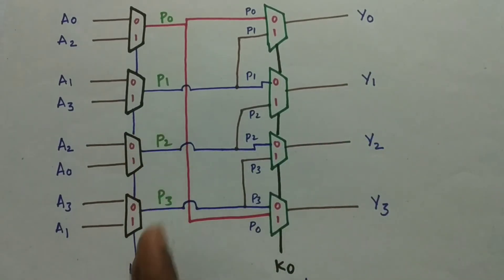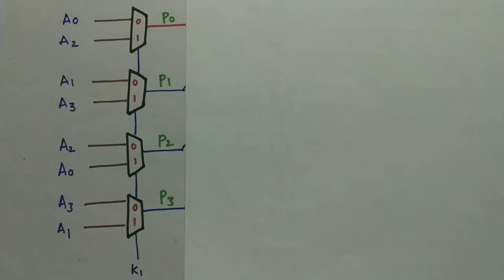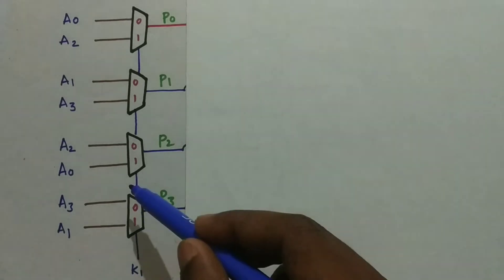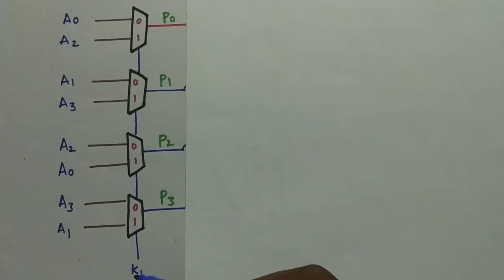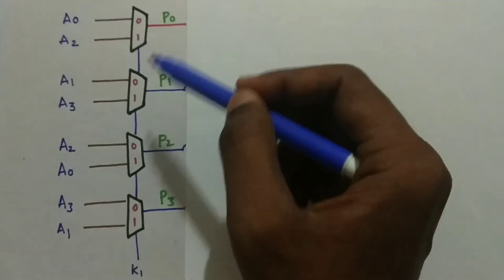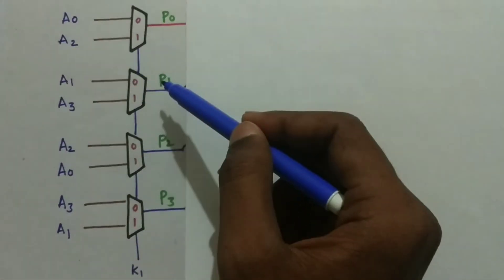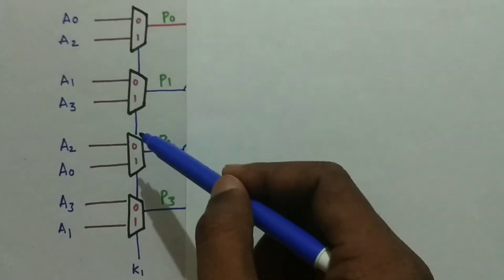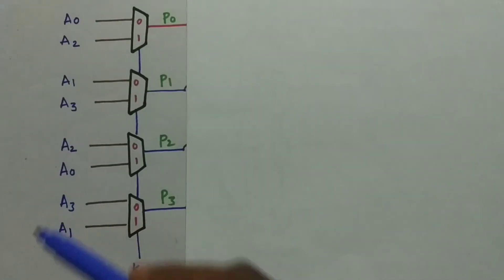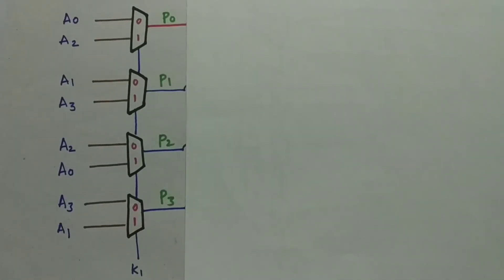What is the operation performed by the first group of multiplexers? When K1 is 0, every multiplexer has select line K1 equal to 0, so P0 is A0, P1 is A1, P2 is A2, and P3 is A3. That is what happens when K1 is 0 — no shift, just a pass-through.